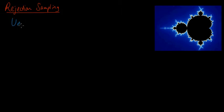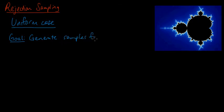First, we're going to focus on the uniform case. That is rejection sampling when you want to draw samples from a uniform distribution on some complicated set. So our goal here is to generate uniform samples, or samples from the uniform distribution on some set A, where A is some complicated set.